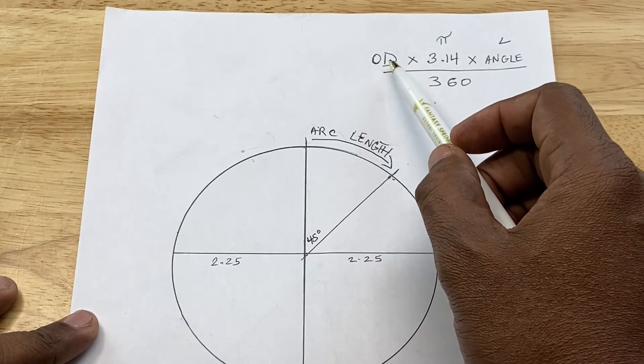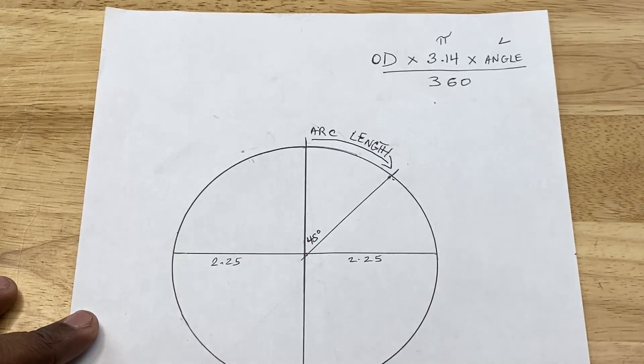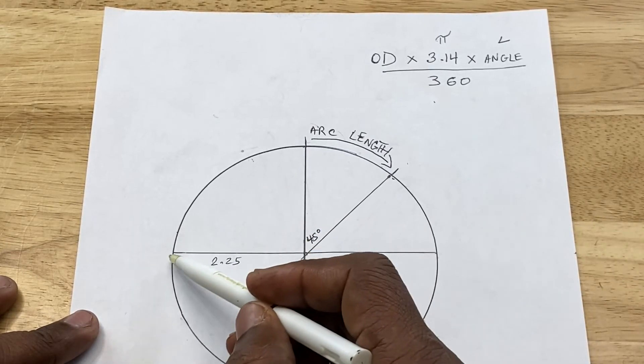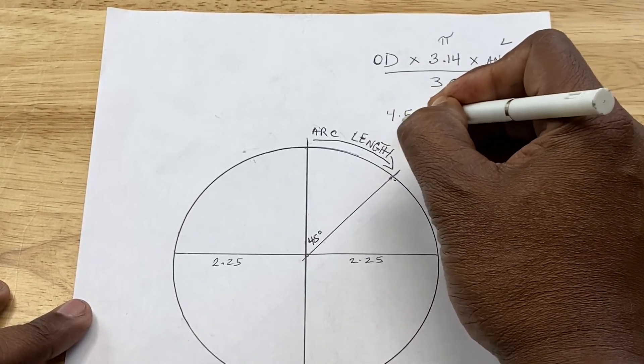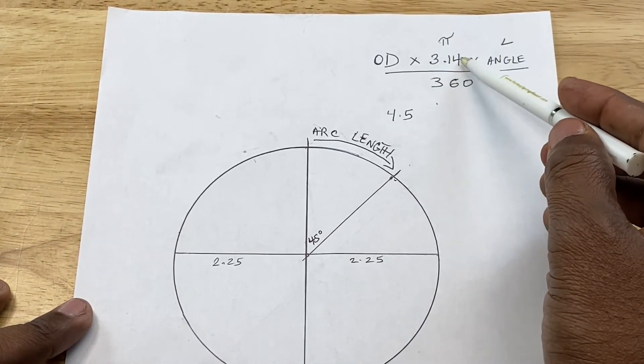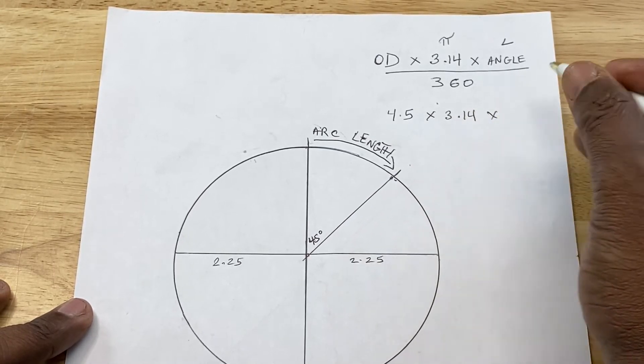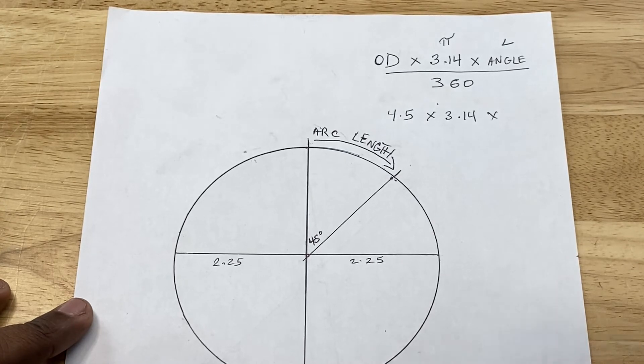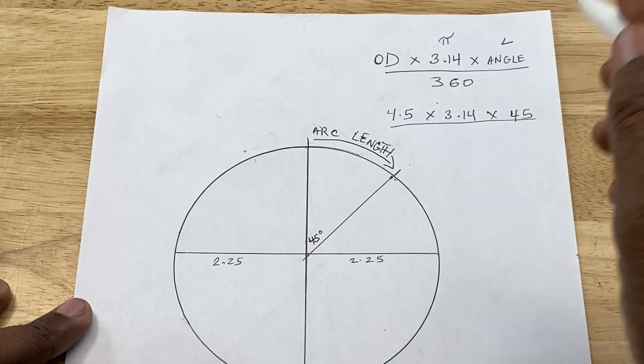So OD stands for outer diameter. That means from this edge, the outer edge, to the other outer edge, that's the outer diameter. It includes the inner diameter and the thickness and all that stuff we talked about earlier. And we know that from this outer edge to this outer edge, based on our calculations, is 4.5 inches. So we write 4.5 there. Now this right here represents pi. And if you know from your math class, that's the symbol of pi and it equals 3.14. So it's 4.5 times 3.14 times angle. So what's the angle? We said that we want our nozzle or pipe inserted at 45 degrees. And that's 45 degrees right there. Divided by the full degrees of a circle, which is 360 degrees.